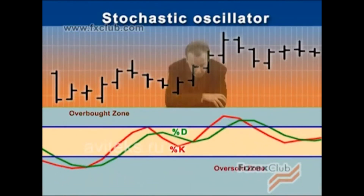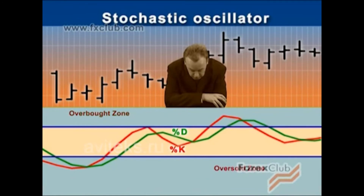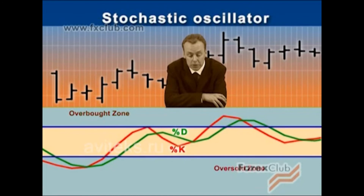The stochastic oscillator generates trading signals in a similar way to the previous indicator, the RSI — at first sight.